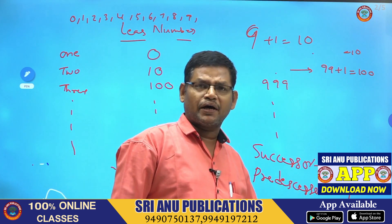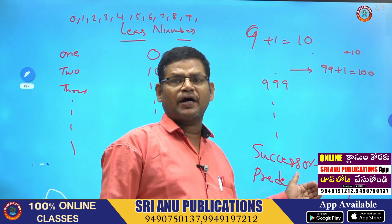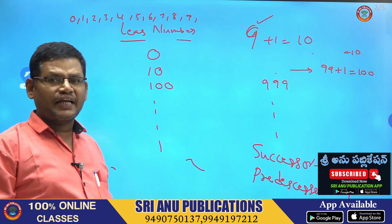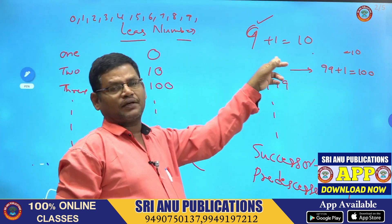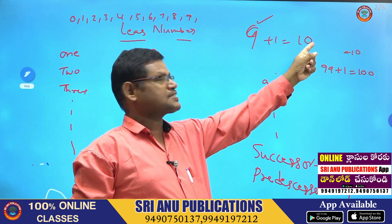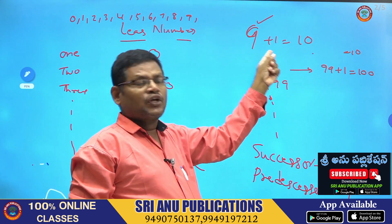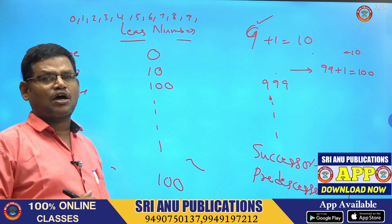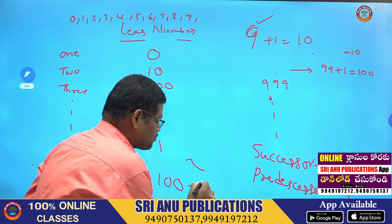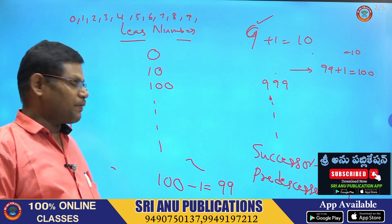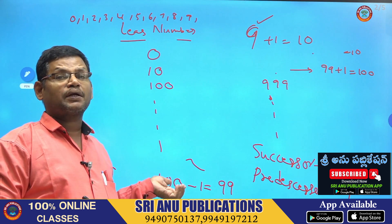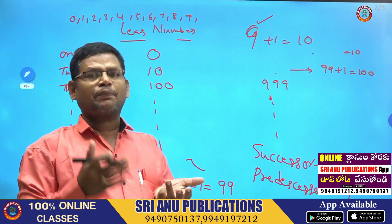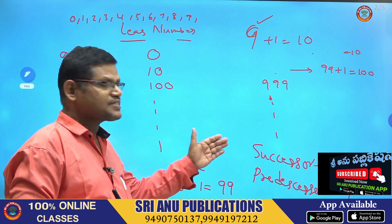To find the predecessor of any number, you subtract 1. To find the successor of any number, you add 1. For example, the successor of 9 is 9 plus 1 equals 10. For the predecessor: suppose you take 100; the predecessor of 100 is 100 minus 1, which equals 99. So when finding the successor, add 1; when finding the predecessor, subtract 1.